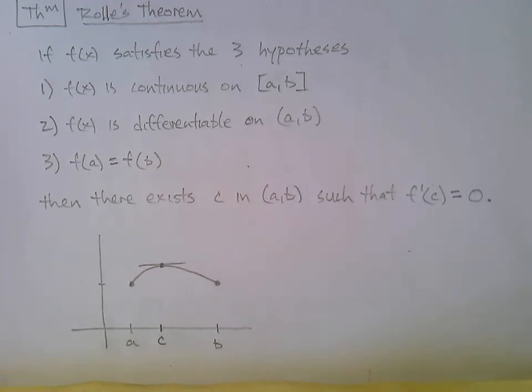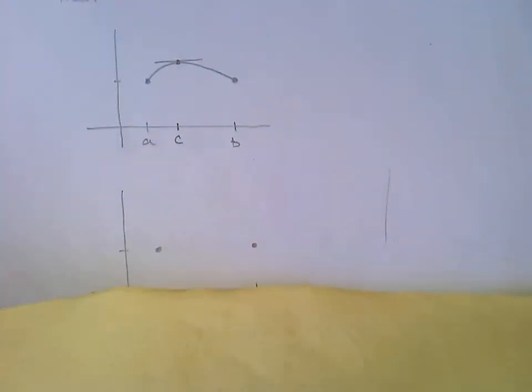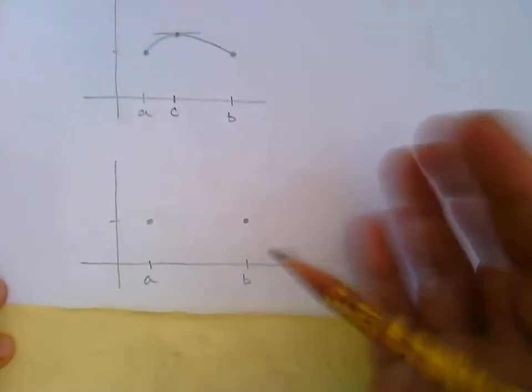Okay. So is the conclusion really true? Does there exist c somewhere between a and b such that the derivative equals zero? You're like yeah, of course, right up there at the top.